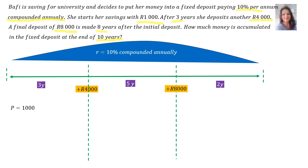We start with P = 1,000 rand, using the formula A = P(1 + i)^n, because the question specifically said it was compounded annually. So P = 1,000, bracket 1 plus i, where the rate is 10% over the whole timeline, therefore i = 0.1, and the time is 3 years, so it is raised to the power of 3. Slotting that into the calculator, A = 1,331 rand.